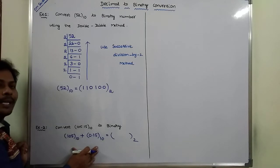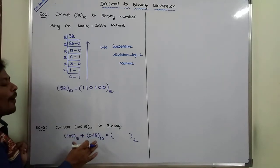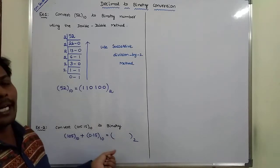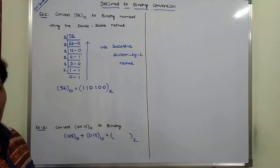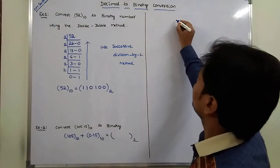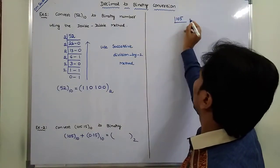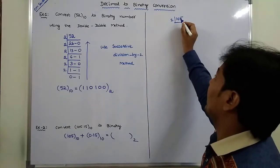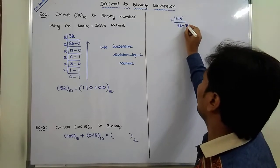Once we get the result of both subproblems, we combine them to get the equivalent binary number. Now we go for the integer part 105. 2 divides 105, 52 times, remainder is 1.